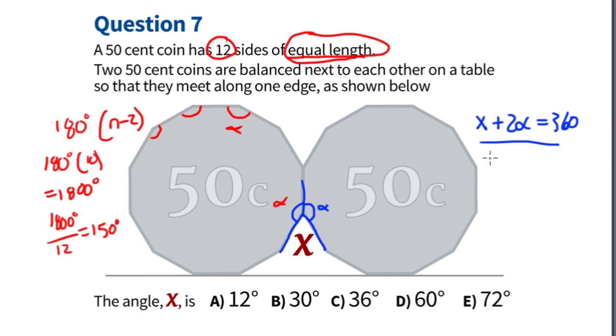We can solve this equation: 360 minus 2 times 150 is equal to X. So X is equal to 60 degrees. The answer here is D.